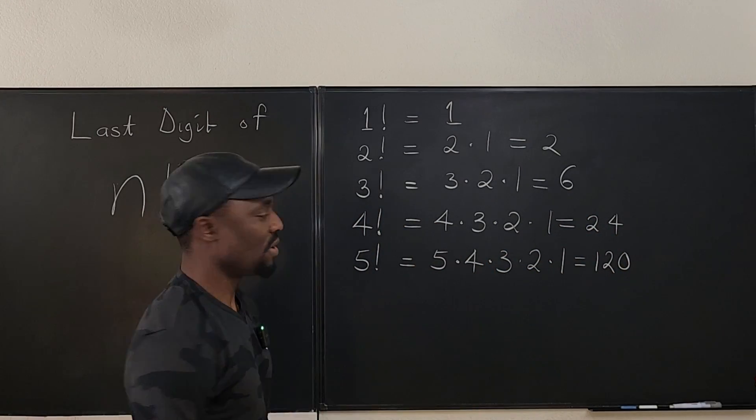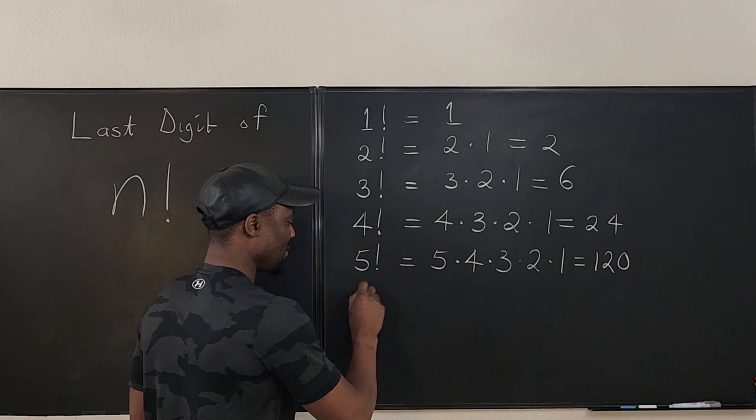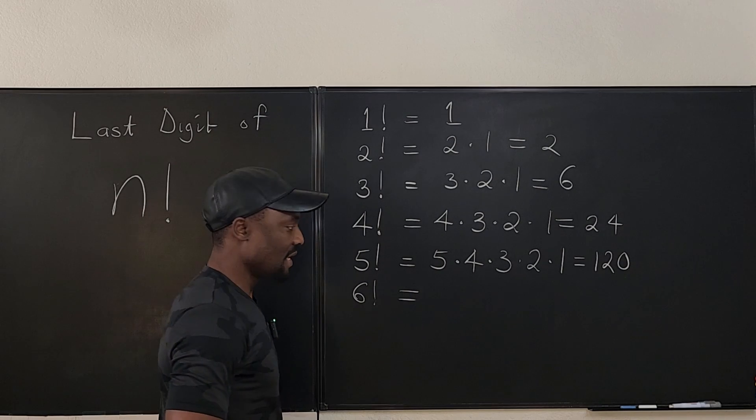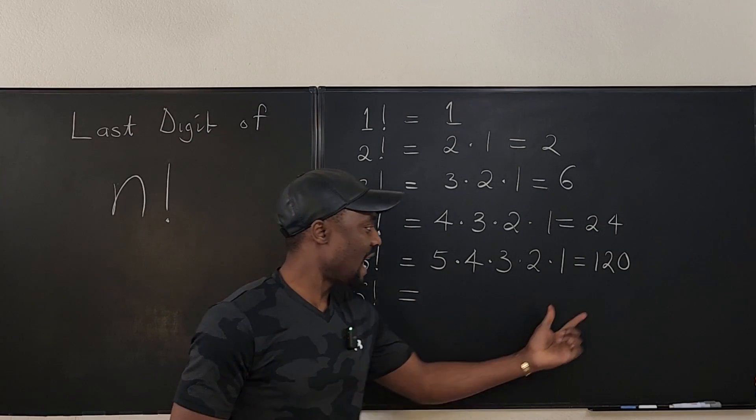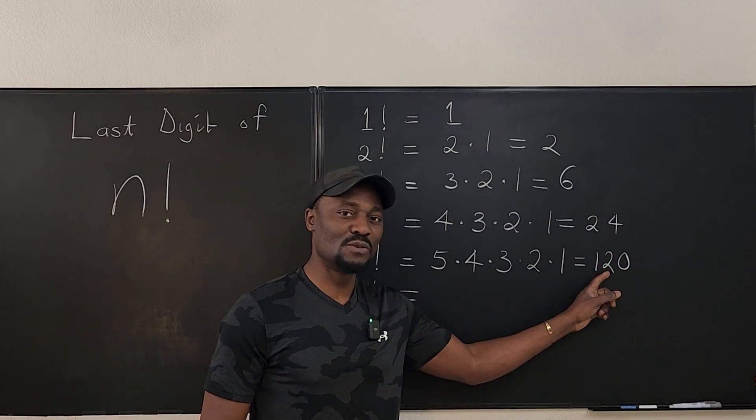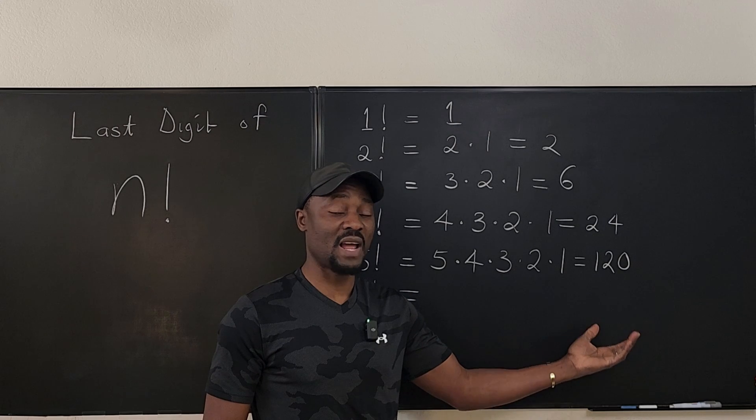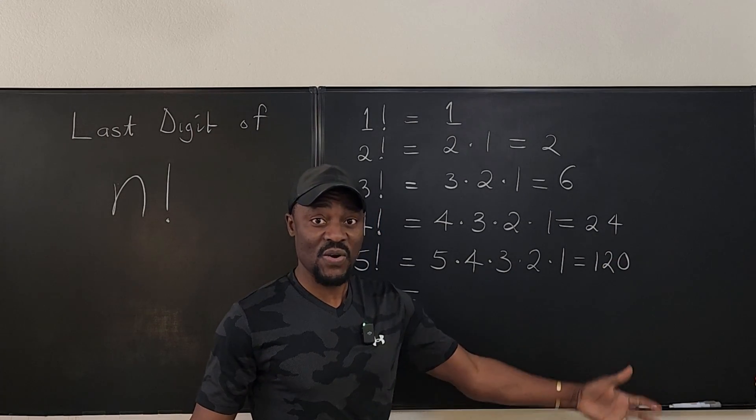Now let's just take one more so we can establish a general rule. So now when we get to six factorial, it's going to be six times 120. But see, if the last digit of this is zero, whatever else you use to multiply this will always end in zero. It's like multiplying 10 by any integer number, you'll always get a zero at the end of it.